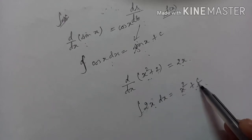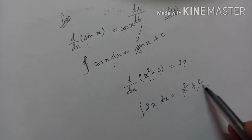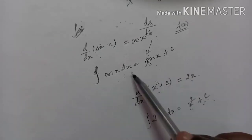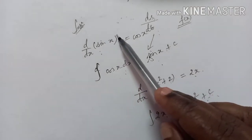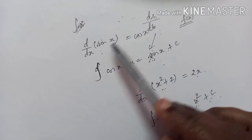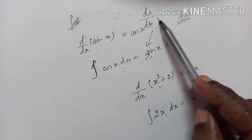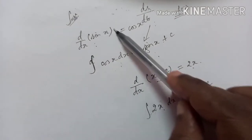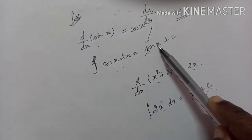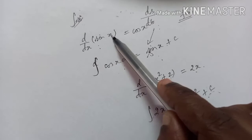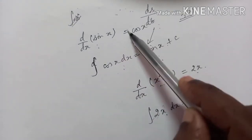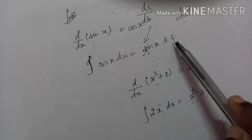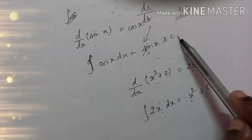This 2 is considered as C here. So we add the constant of integration C. Sometimes in differentiation there may be a constant. When we differentiate that constant, it becomes 0. But when you integrate, you should get the original expression including the constant. If there is a constant, it will not appear when you differentiate it. That is why we add the constant of integration C.